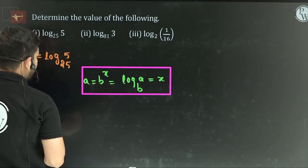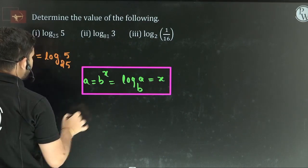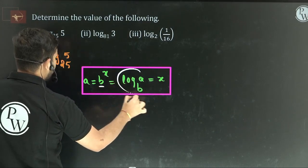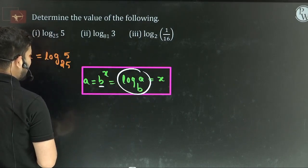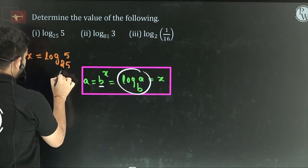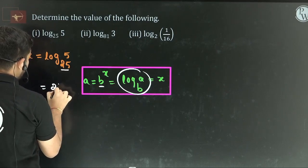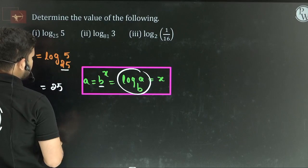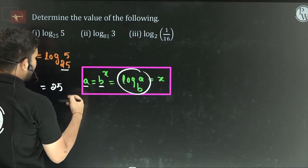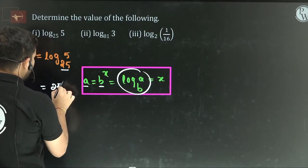So for Example 1, the logarithm value given is: log base 5 of 25. Let us suppose x equals that value. So we need to write it in the format b to the power of x equals a. Here, b is 25 — wait, the base is 5 and argument is 25, so 5 to the power of x equals 25.